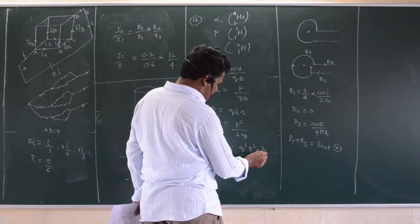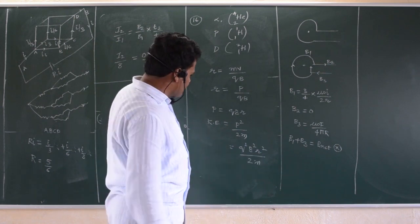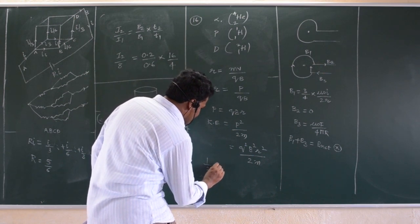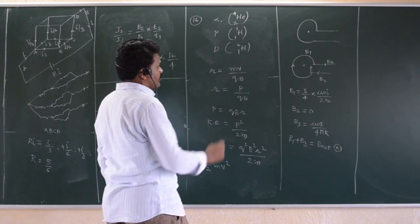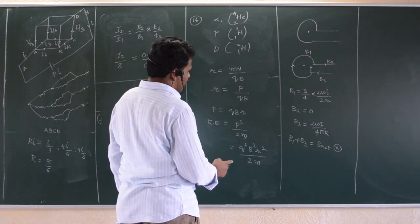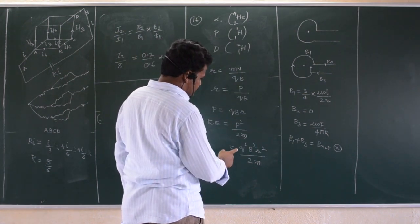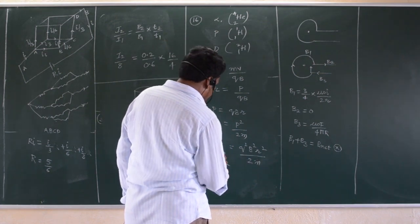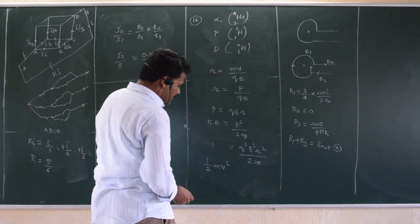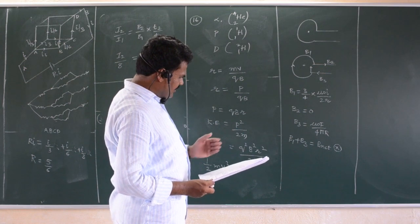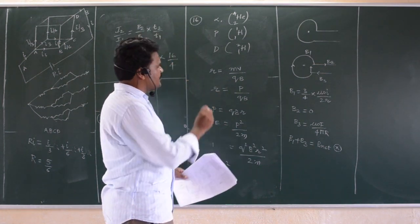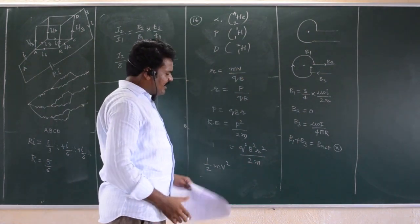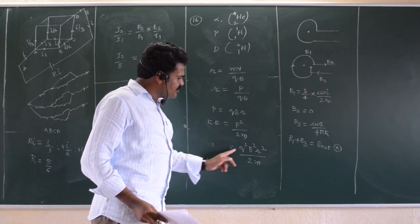You have to eliminate R from the expression because R is not given in the problem. Each particle's radius is proportional to M by Q, and kinetic energy is proportional to R-squared. So calculate the radius of each particle. If radius is more, kinetic energy is more — that is the principle of the cyclotron. For each revolution the radius increases, and when radius increases, kinetic energy also increases.